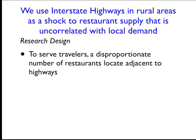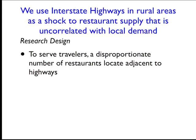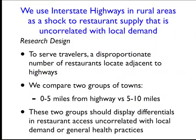What we're going to do is compare two groups of towns: those that are literally right on the highway — zero to five miles from the highway — are going to have good access to fast food, and those that are somewhat further will have poorer access. We drew these boundaries at 0 to 5 versus 5 to 10 miles, though we experimented with other choices like 0 to 10 versus 10 to 20. However you draw them, that inner ring around the highway is going to have better access to fast food than people who live somewhat further out. The idea is that the two groups of towns should show differentials in restaurant access that are uncorrelated with local demand for restaurants or with general health practices.